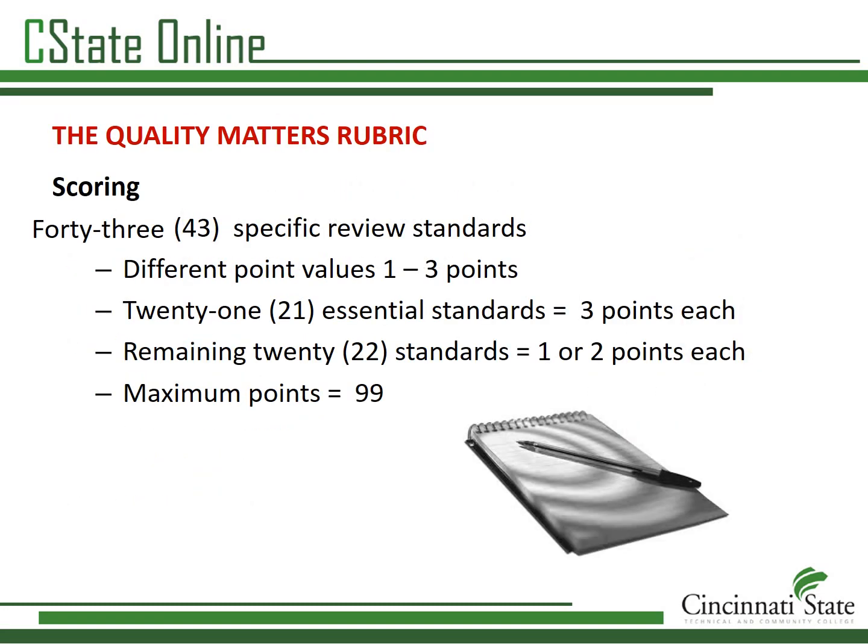Within the eight general standards are 43 specific review standards. In order for a course to meet expectations, it must meet all of the three-point essential standards and receive a total score of 84 out of the possible 99 points. We never use the words pass or fail in a QM review. A standard is either met or not yet met, and every course is expected to eventually meet Quality Matters expectations.